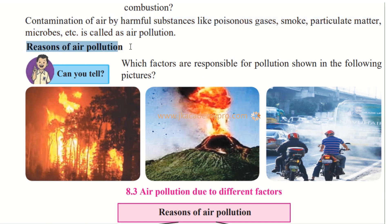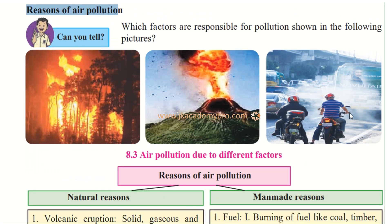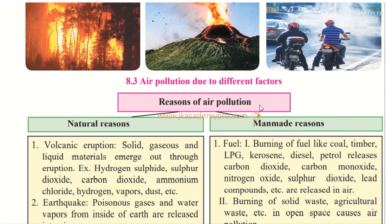Can you tell which factors are responsible for pollution shown in the following pictures? Here there is forest fire, here there is a volcano, and here there is vehicular traffic. All are causing pollution — smoke from forest fire, smoke and gas from the volcano, and poisonous carbon monoxide from vehicles. So air pollution is due to different factors — some are natural and some are man-made.